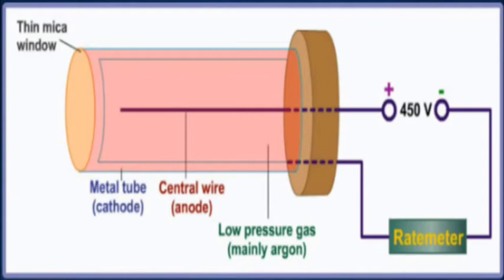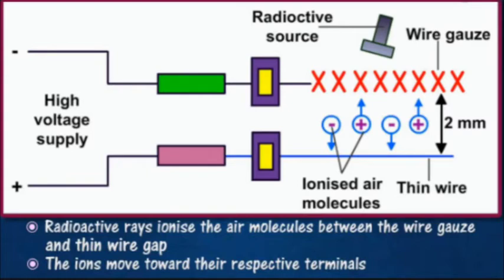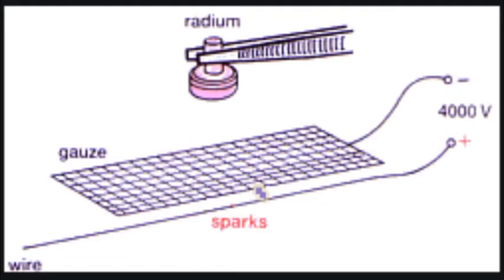Next we have the spark counter. The source ionizes the air, and the ions cause sparks to form between the gauze and fine wire. The voltage between the gauze and wire is about 5 kilovolts. The metal gauze is connected to the negative terminal and there is a radioactive source. When the radiation comes through to the wire, ionization of air molecules completes the circuit, and sparks are seen between the wire gauze and the fine wire connected to the positive terminal — that is why it is called the spark counter.